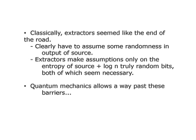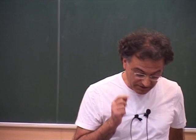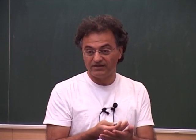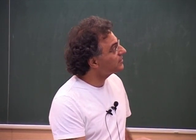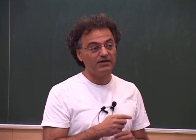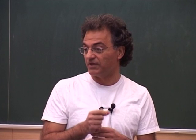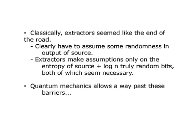It turns out you can get past these seeming barriers using quantum mechanics. One would imagine that randomness and quantum mechanics are really connected in a fundamental way, so if you want to generate randomness you should use quantum mechanics. But that's not the issue here. The issue is not how do you generate randomness — the question is how do you certify that what you've generated is truly random, without assuming what went into the box. It's more than a bit of a surprise that you can get past these barriers in a quantum world.